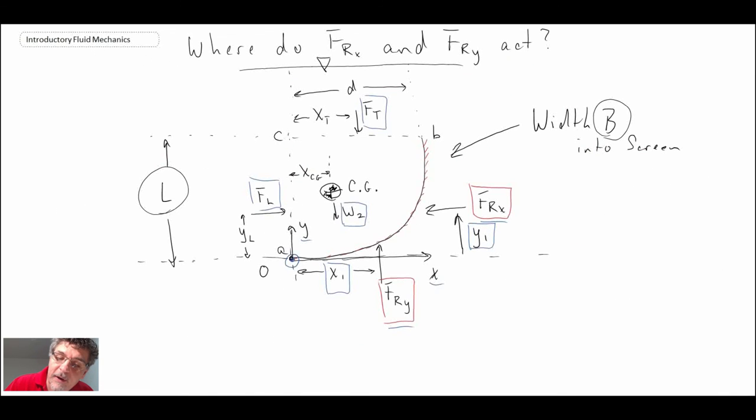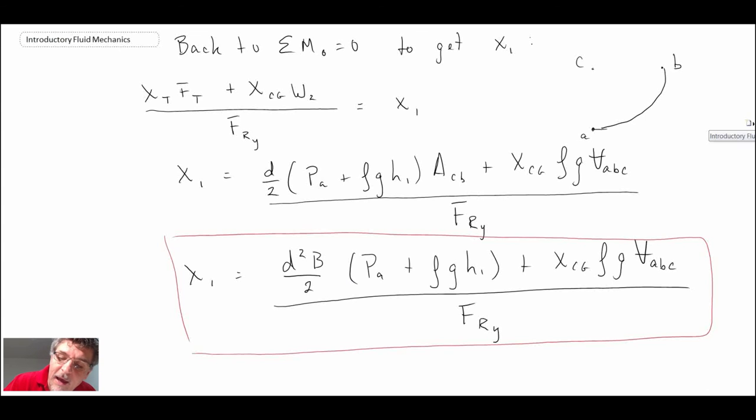We have that, and what we did is we solved for these forces here which we had FRX and FRY. But what we were doing now is trying to figure out where they act, and what we did is we defined Y1 as being this direction and then X1 as being in this direction, both from this origin. So the force acting, it could be something like that and then it would be like that on the surface.